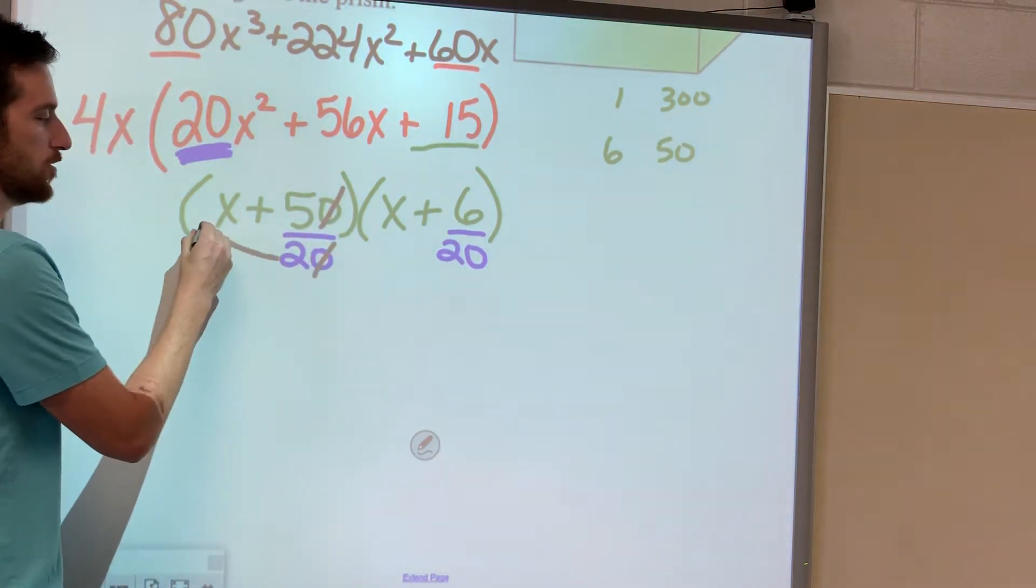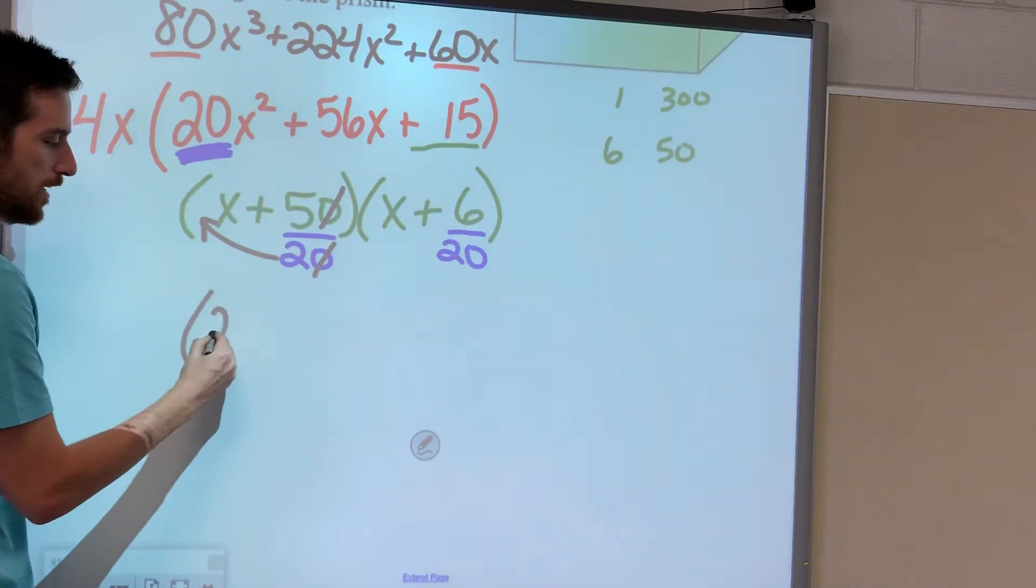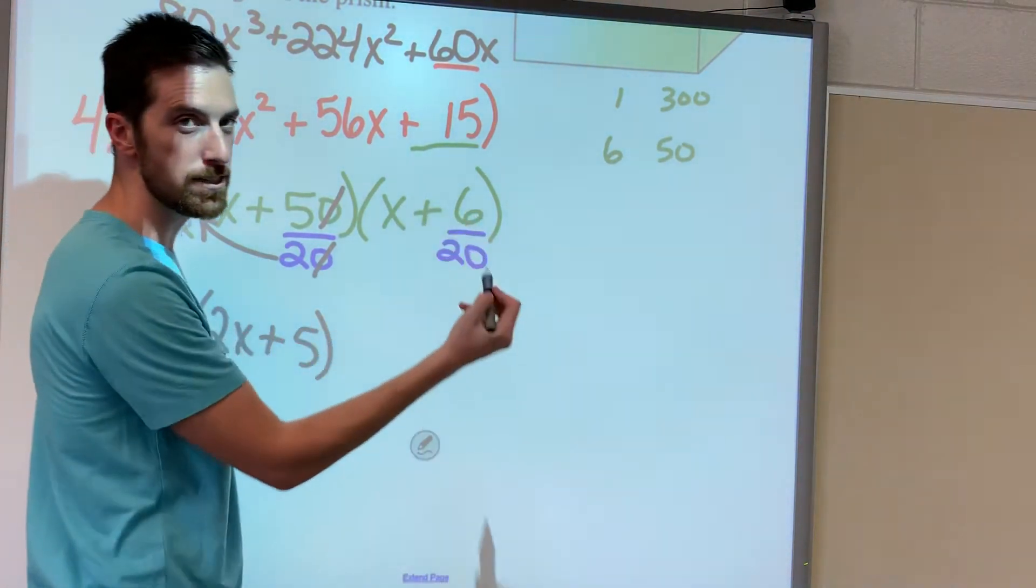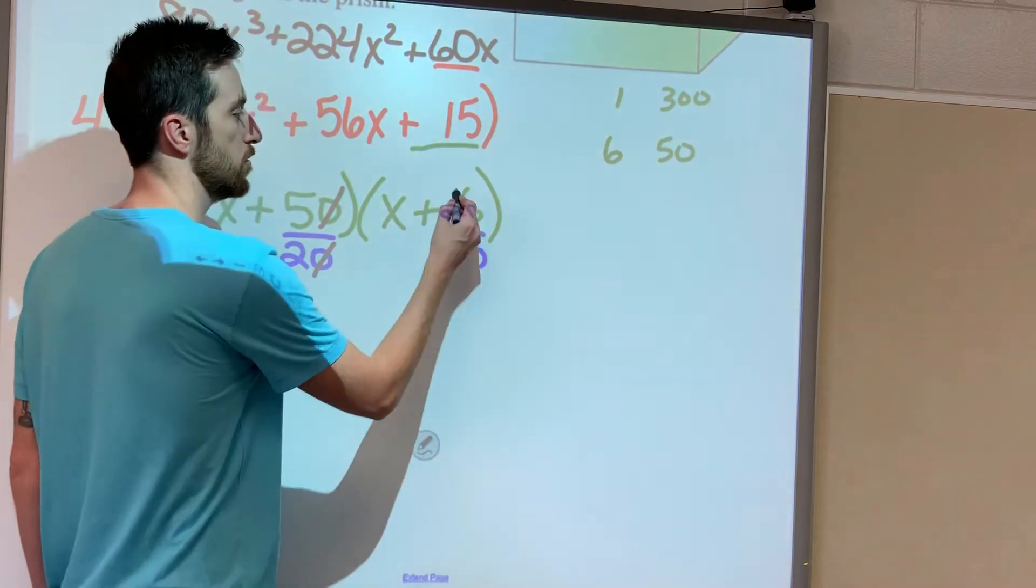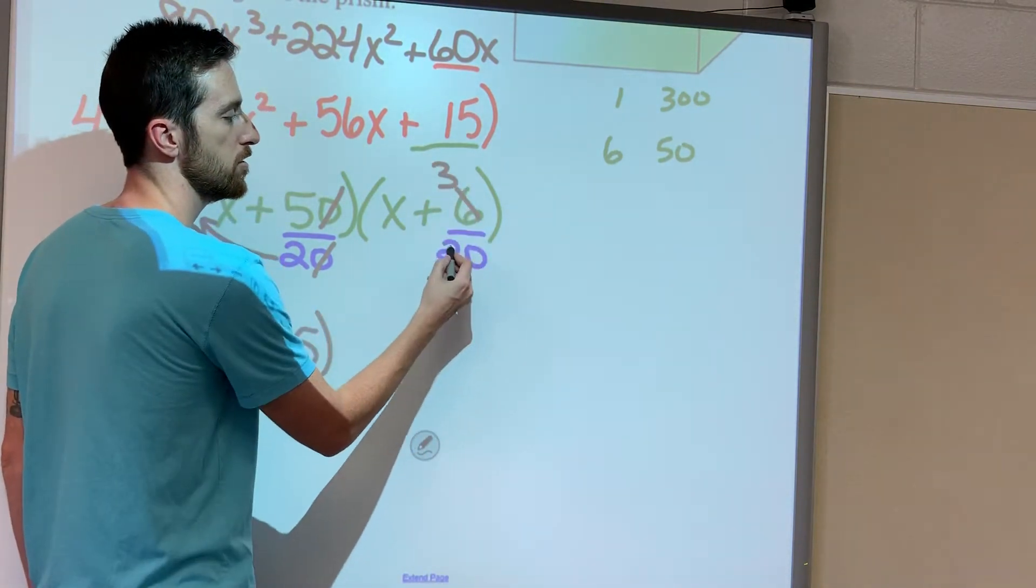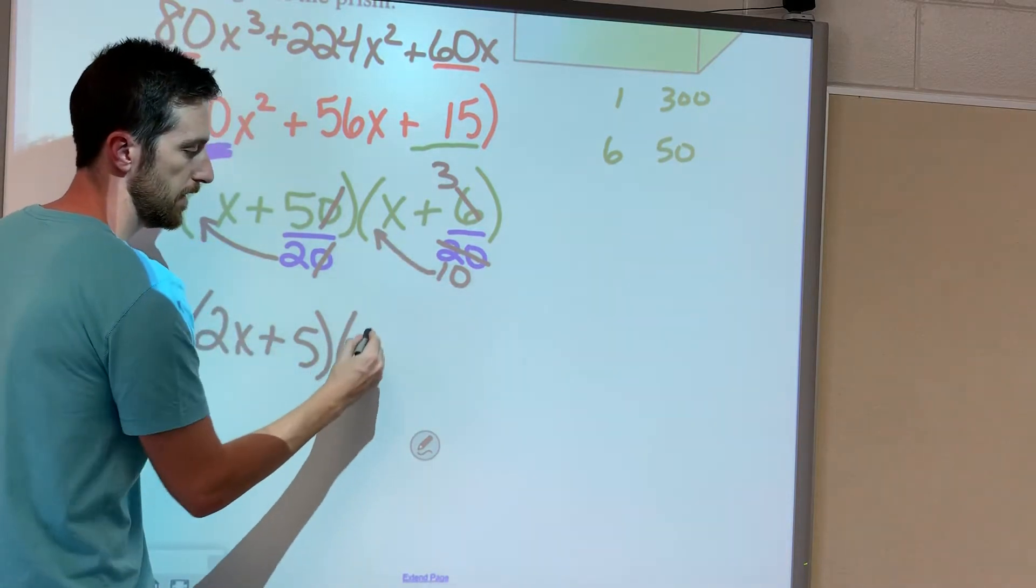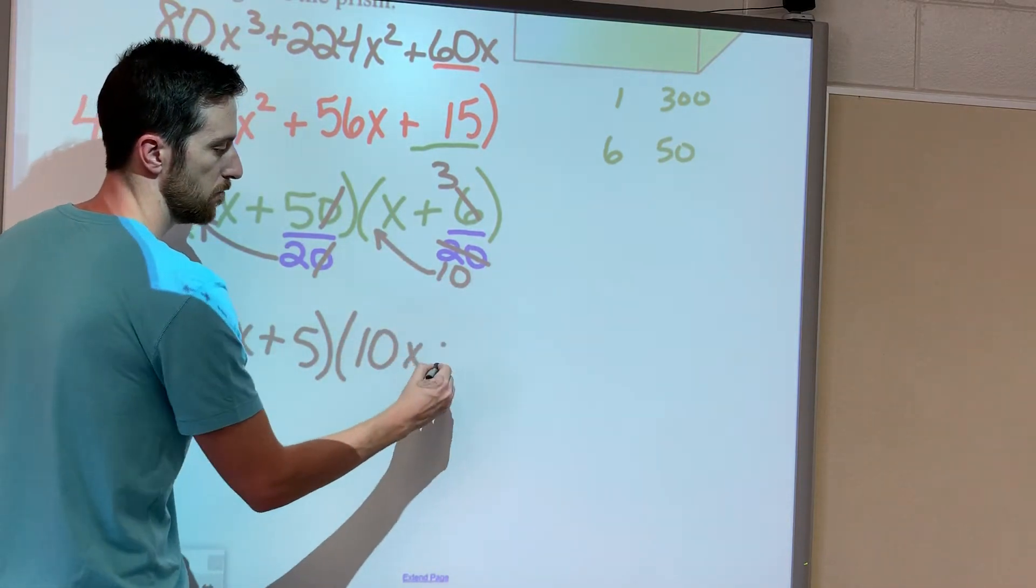And then remember we kick the 2 to the front, it becomes 2x plus 5. Over here, what goes into 6 and 20? 2. Goes into 6 3 times, goes into 20 10 times. So then we kick the 10 to the front, 10x plus 3.